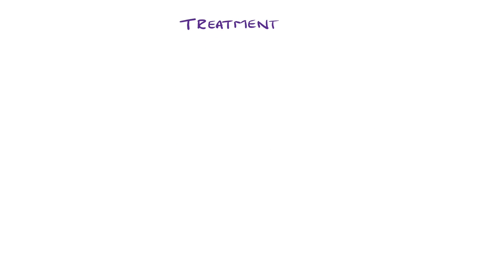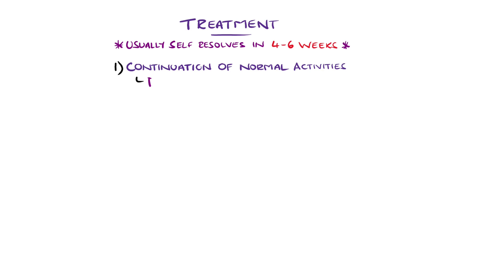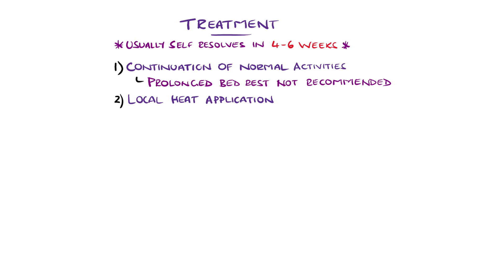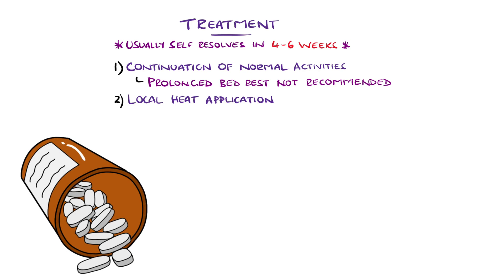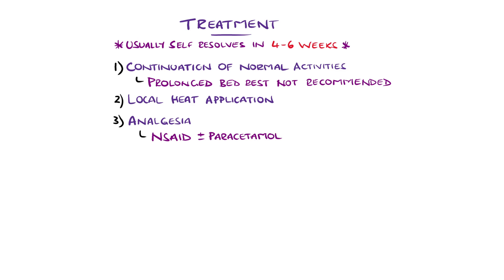Sciatica will typically spontaneously resolve in four to six weeks of self-management, which involves encouragement of continuation of normal activities, as prolonged bed rest is not recommended and can increase the risk of recurrence. Heat can be applied locally to promote muscle relaxation and relieve pain. According to NICE guidelines, analgesia is recommended, particularly short-term non-steroidal anti-inflammatories, and paracetamol may be used alongside this but is not recommended alone. If non-steroidal anti-inflammatories are contraindicated, codeine may be used with or without paracetamol.